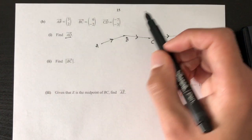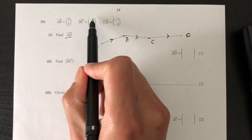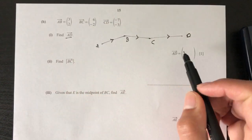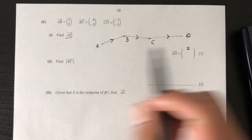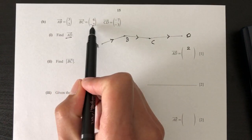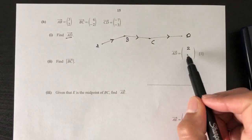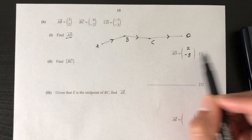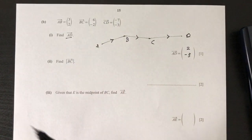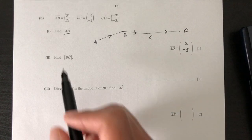So let's do that: 3 plus 6 is 9, 9 minus 7 is 2, 2 plus minus 2 is 0, 0 plus minus 3 is minus 3. So AD equals (2, -3). That's part one.